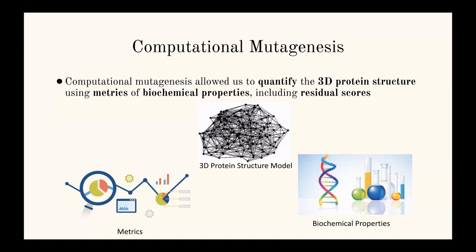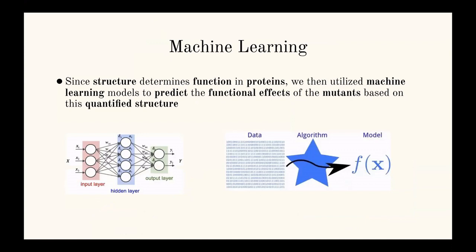About the actual machine learning part — looking at the figure on the right — all the incoming data is fed into an algorithm using commonly used machine learning algorithms, and the output in our case is the functional effects. The reason it's key to know the functional effects or fitness values of these mutations is that we can then determine which of these mutations are going to lead to cancer — which are carcinogenic.